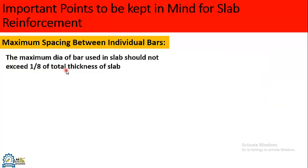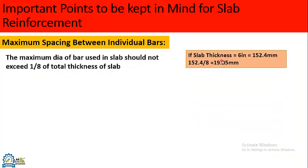What is the maximum diameter bar that can be used in a slab? The maximum diameter bar used in a slab should not exceed 1/8 of the total thickness of the slab. For example, if the slab thickness is 6 inches, that is 152.4 mm, dividing by 8 gives 19.05 mm. So 19.05 mm is the maximum diameter of bar that can be used in a 6-inch thick slab.